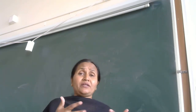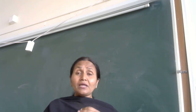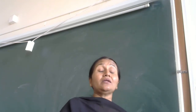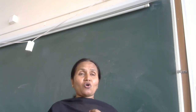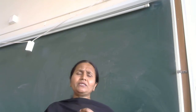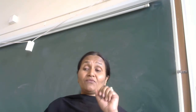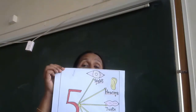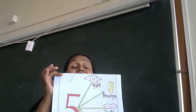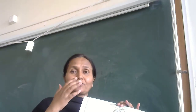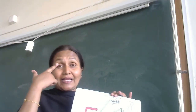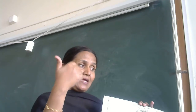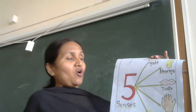We have learnt our body. In that lesson, we have learnt in the previous year about our body — the sense organs we have. You all know how many sense organs we have? We have five sense organs. Those five sense organs are: eyes, nose, tongue, ears, and skin. These are the five sense organs.